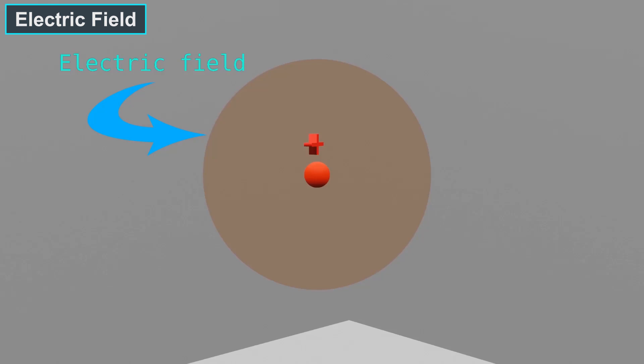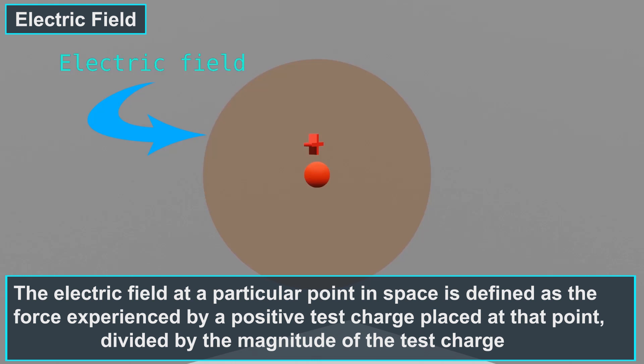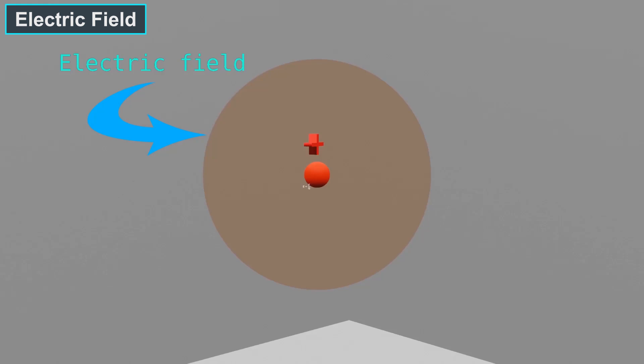We can define the electric field as follows. The electric field at a particular point in space is defined as the force experienced by a positive test charge placed at that point divided by the magnitude of the test charge. This is represented by the equation E equals F by Q.